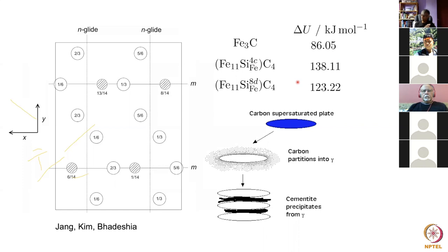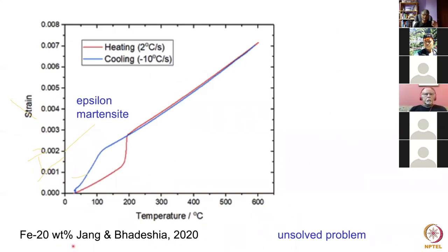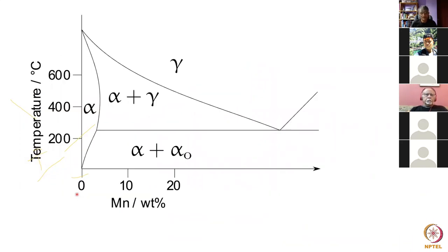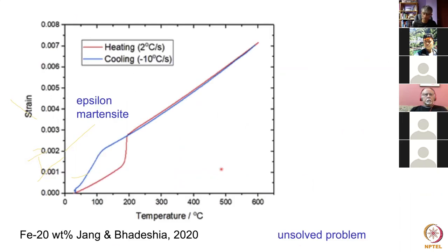First-principles calculations are best used when there is no other option, since they are performed at zero kelvin and zero pressure. Nowadays thermodynamic databases include results from first-principles calculations, which use electron theory to work out energetics. As a final unsolved problem: in an iron — 28 wt% manganese alloy, heating produces austenite below 200°C, and cooling produces epsilon martensite — the hexagonal form. Yet a phase diagram calculation for iron-20 wt% manganese indicates that there is no epsilon phase.